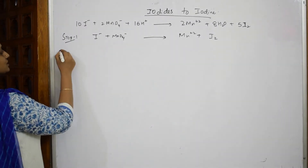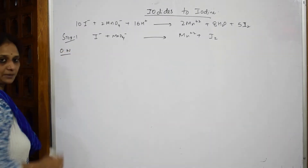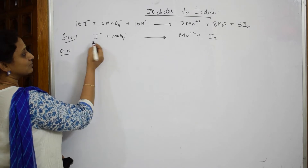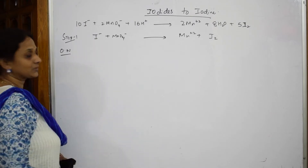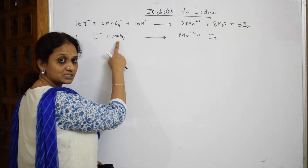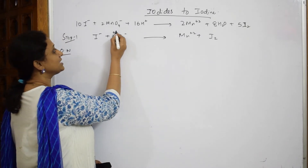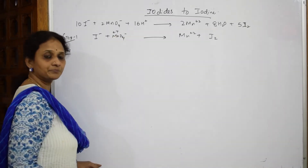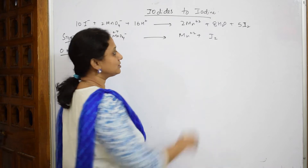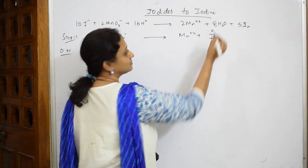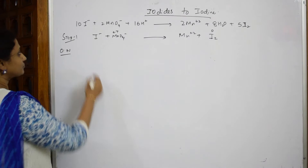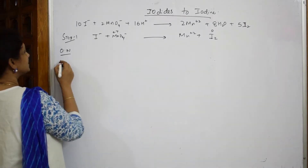In Step 1, calculate oxidation numbers. For iodide, the oxidation number is -1 as given. We already calculated manganese in the previous video — manganese is +7 in MnO₄⁻. In the products, manganese is +2 and iodine is 0.